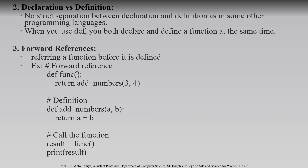There is no specific difference between declaration and definition in Python — both are the same. Both start with the same keyword 'def', so it is like declaration and definition together. Next is forward reference: even before you create a function you can call that function. That is called forward reference. Let us see an example.